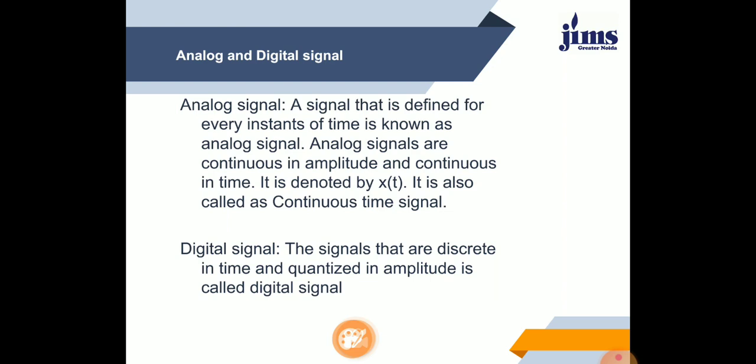A signal which is defined for all time periods is known as an analog signal. Analog signals are continuous in amplitude and continuous in time. It is denoted by x(t) and is also called a continuous time signal.